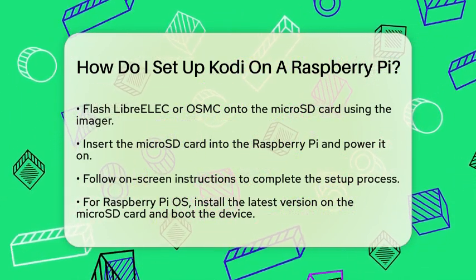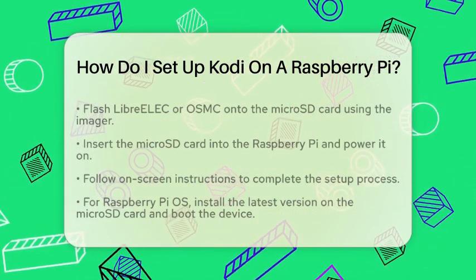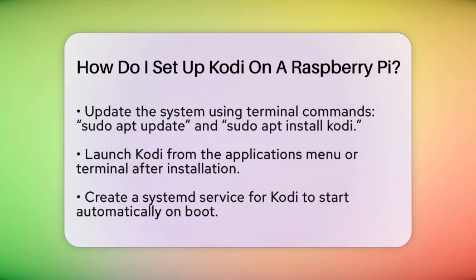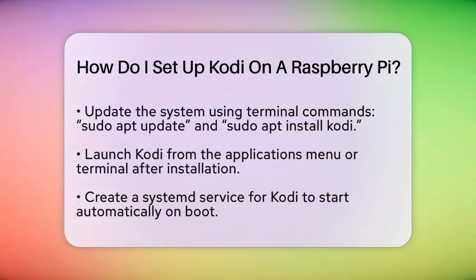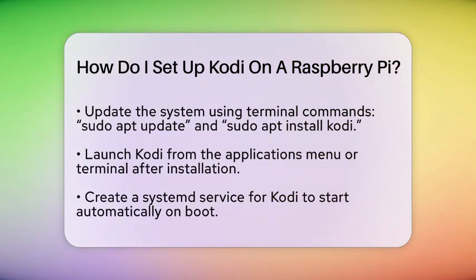If you decide to go with Raspberry Pi OS, first install the latest version on your microSD card. Boot up your Raspberry Pi and make sure you are connected to the internet. Open the terminal and run the commands to update your system and install Kodi. Type in sudo apt update, followed by sudo apt install kodi. After the installation is complete, you can launch Kodi from the applications menu or by typing kodi in the terminal.